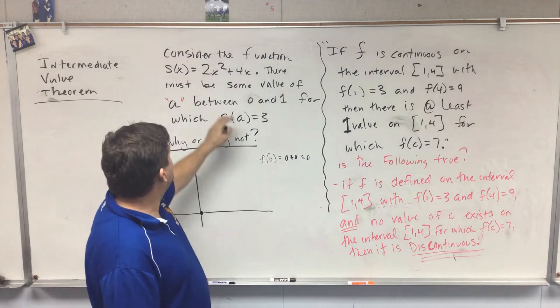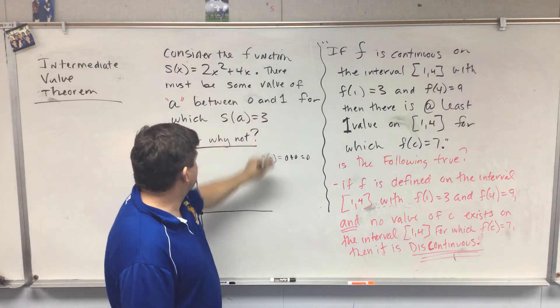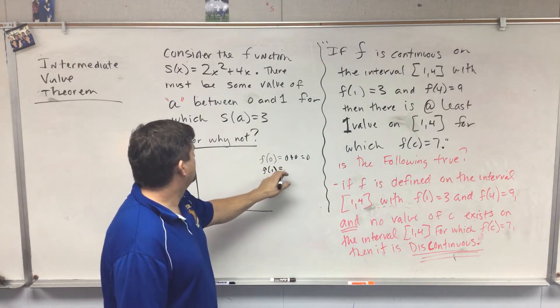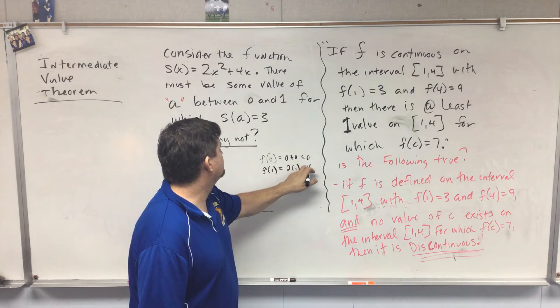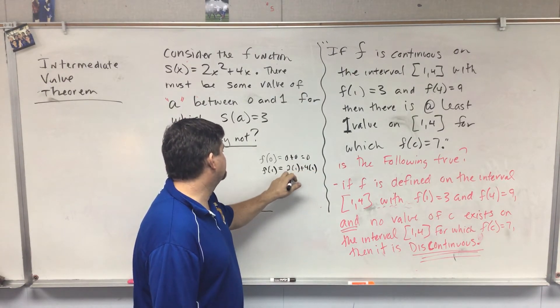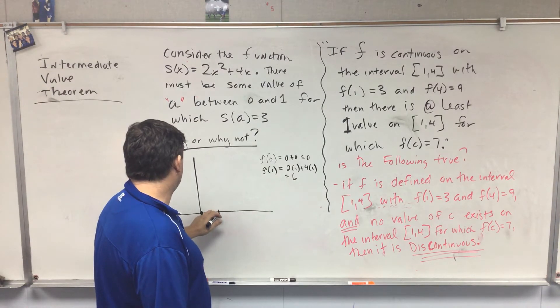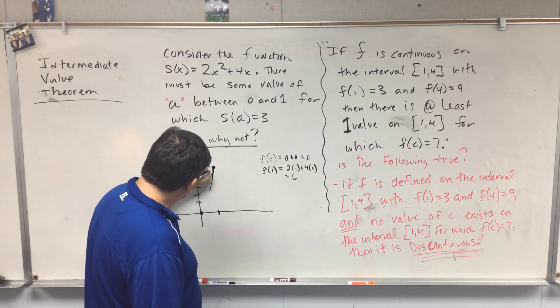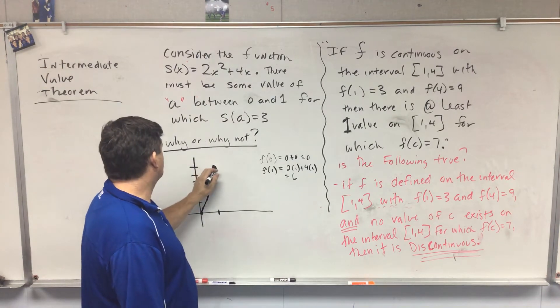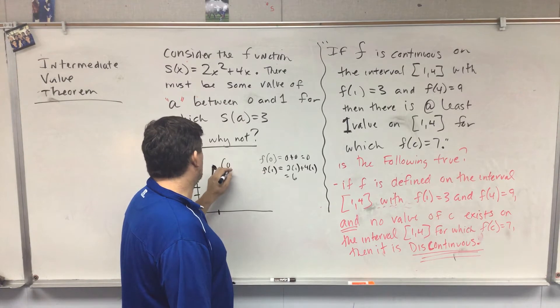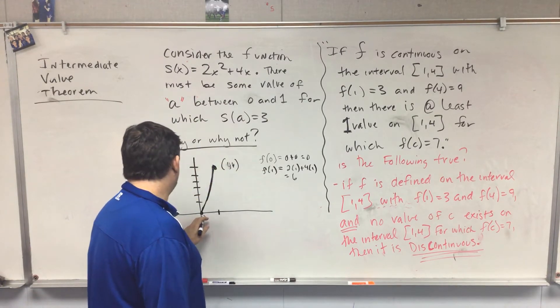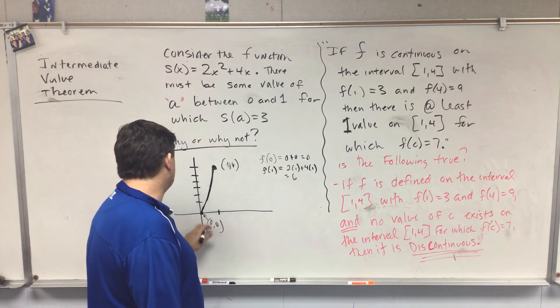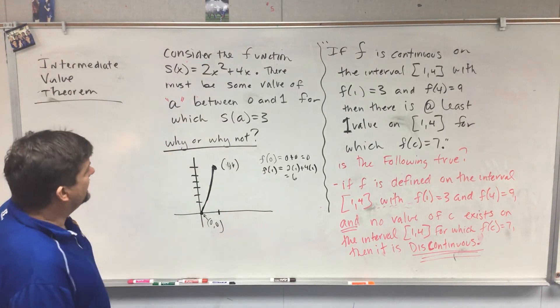Let's just draw this real quick. We have a graph. We have the function 2x² plus 4x. If I plug in 0, f(0) equals 0 plus 0, that equals 0. So f(0), I've got that value. Then we have 1, so f(1) equals 2 times 1 plus 4 times 1, so that value is equal to 6.